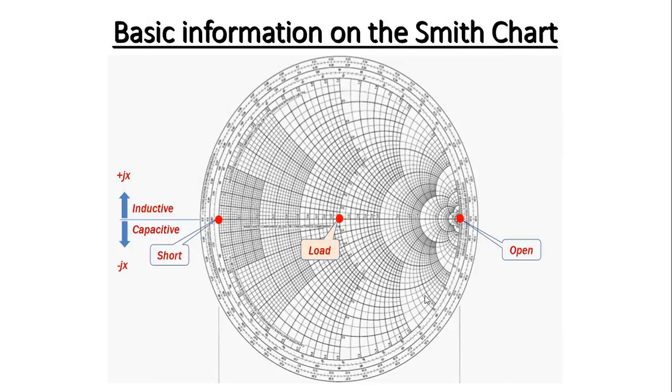Basic information on a Smith Chart: This point one is the load point. This is the short circuit point, this is the open circuit point. The above part is inductive and the below part is capacitive. This line is the resistive line, and the whole circuit around is 0.5.